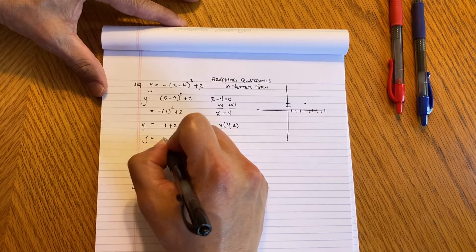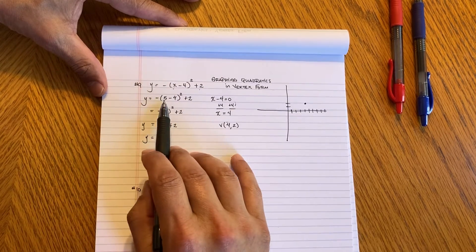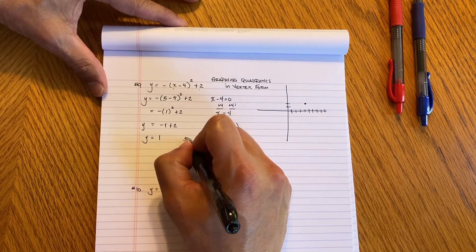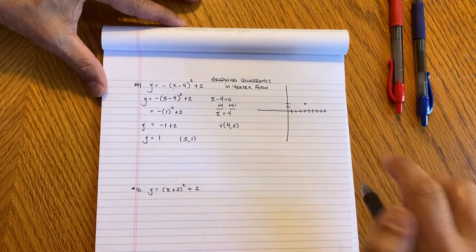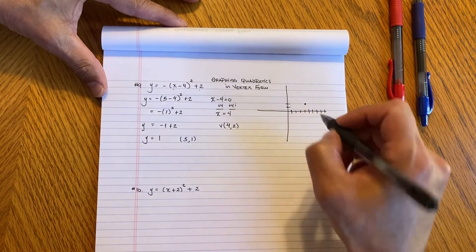So when I do the math, Y is equal to negative 1 plus 2 which is 1. So this point when I plugged in 5, I got a Y value of 1. So that point is 5 comma 1. So I'm going to come over here. So 1, 2, 3, 4, 5. 5 comma 1 is right here.